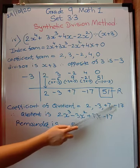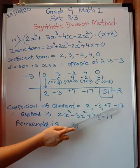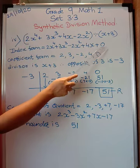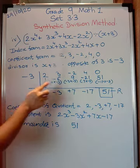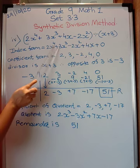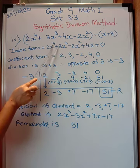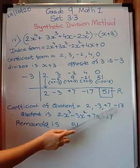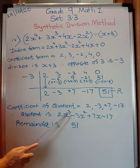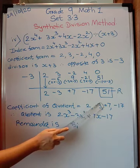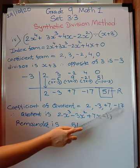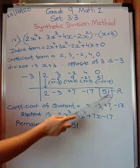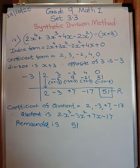Let's verify by counting the original dividend terms: there are 5 terms, and 5 minus 1 is 4, which matches x raised to 4. Similarly, with 4 quotient coefficients, 4 minus 1 is 3, so the first term is 2x raised to 3, then minus 3x squared, then plus 7x, minus 17. This is your quotient. And what is your remainder? 51.